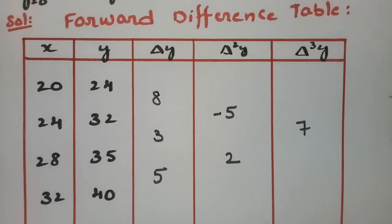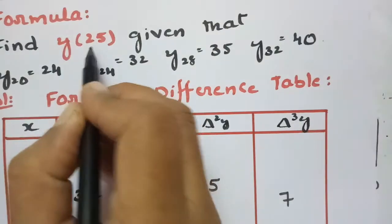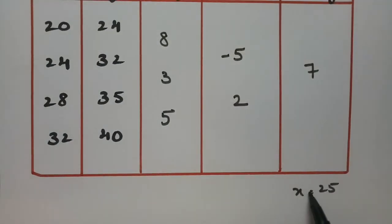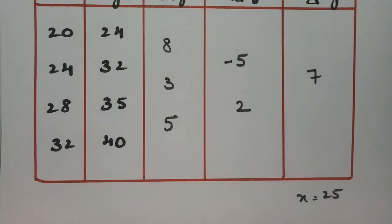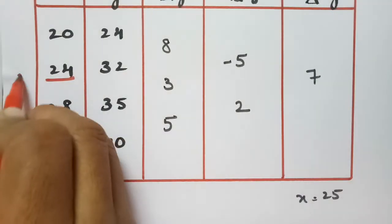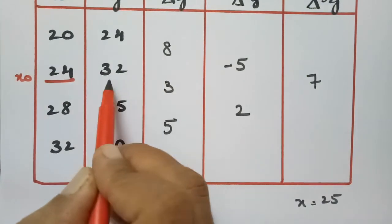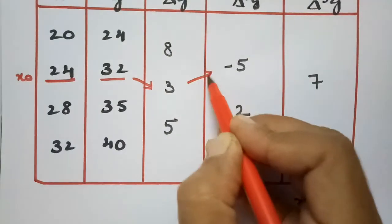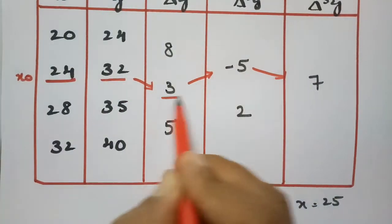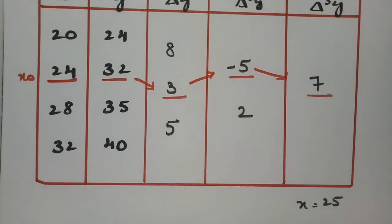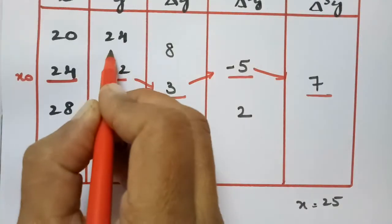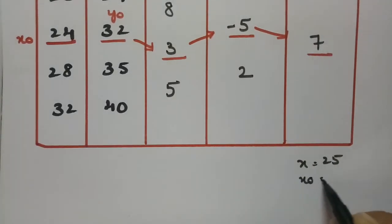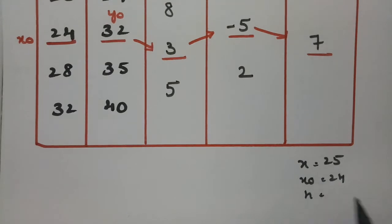We have to find the value at x equals 25. The nearest value to 25 is 24, so I take this as x naught and this will be y naught. Since it is Gauss's forward interpolation, I have to take these forward steps. These are all the values needed for substitution, and this value is nothing but y naught.